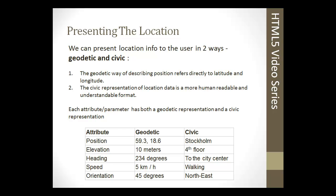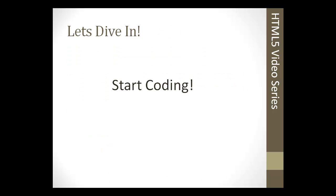There's the geodetic and the civic representation. Each attribute has both a geodetic and a civic representation — the civic is much more human readable. When using the geolocation API, you get geodetic data back from the functions and can present location data as raw numbers, but that's not very user friendly. You can use online services like Bing Maps and Yahoo Geoplanet to translate between the two presentation modes. That's it for the geolocation slideshow — now we can dive in and start coding.